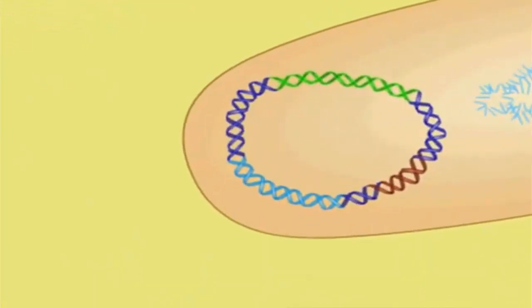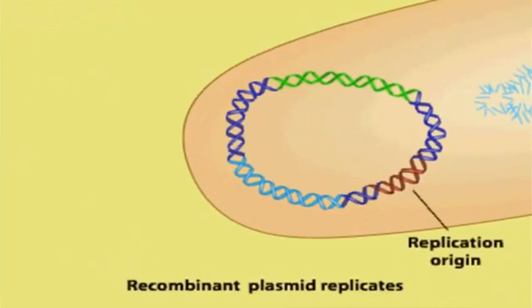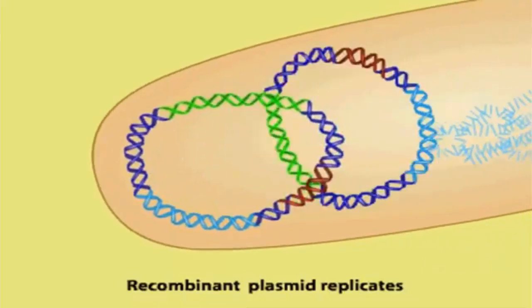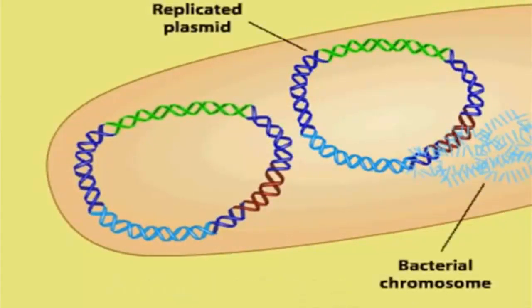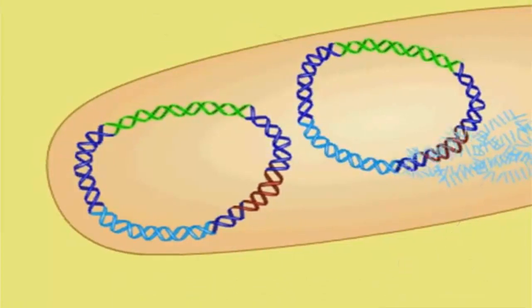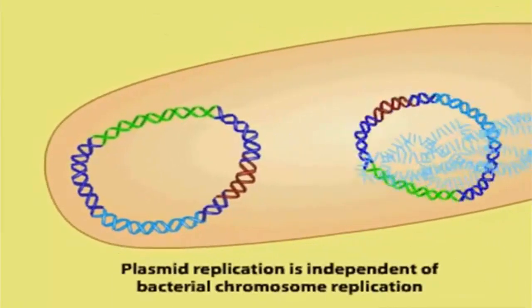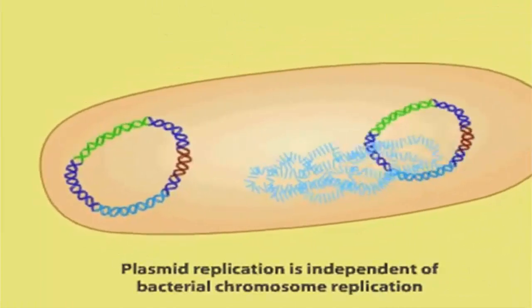The replication origin allows the plasmid to replicate by using the host cells' enzymes. Plasmid replication is independent of host cell division, but plasmids are distributed to each daughter cell when the host cell divides.